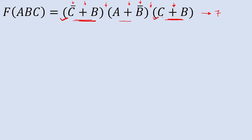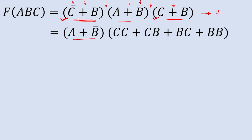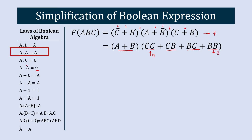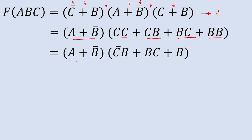We keep A plus B-bar as is. Multiplying out: C-bar·C gives C-bar·C, C-bar·B gives C-bar·B, B·C gives BC, and B·B gives B·B. Now C-bar·C equals 0 by the law A·A-bar equals 0, and B·B equals B by the law A·A equals A. So the term simplifies to A plus B-bar, then C-bar·B, BC, and B.